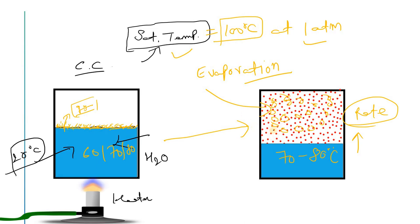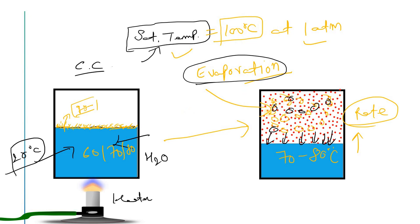At equilibrium, the vapor molecules exert some pressure on the free surface of the liquid. When evaporation of a liquid takes place in a closed container, vapor molecules accumulate in the free space above — as we already discussed. These vapor molecules exert a partial pressure on the liquid surface. This partial pressure of the vapor molecules is known as the vapor pressure.